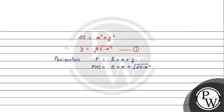Now we have to find the maximum of this function. First, we will find the critical point. For the critical point, we find the derivative dp/dx. The derivative of 5 is 0, the derivative of x is 1, and using the chain rule on square root of (25 minus x squared), we get: dp/dx equals 1 minus x divided by square root of (25 minus x squared).